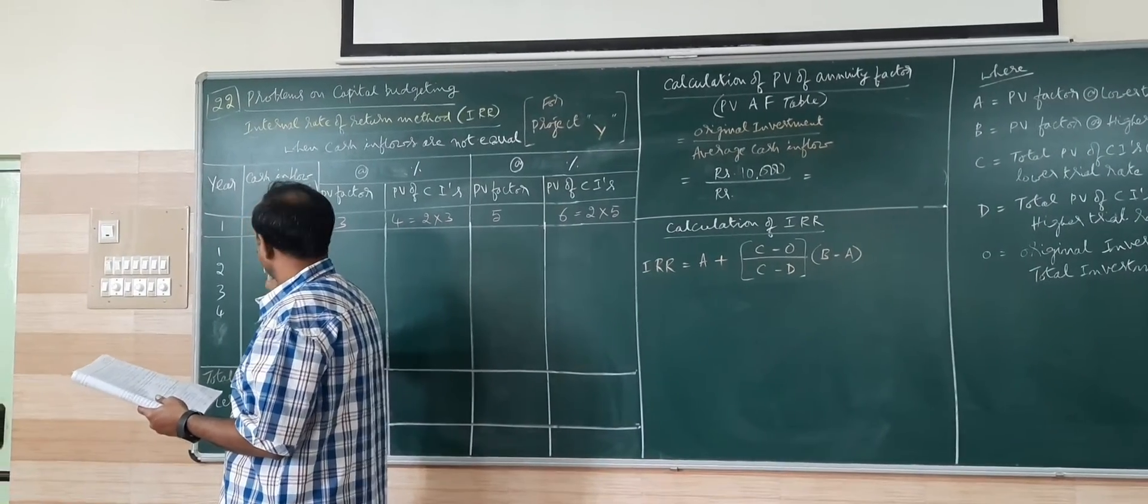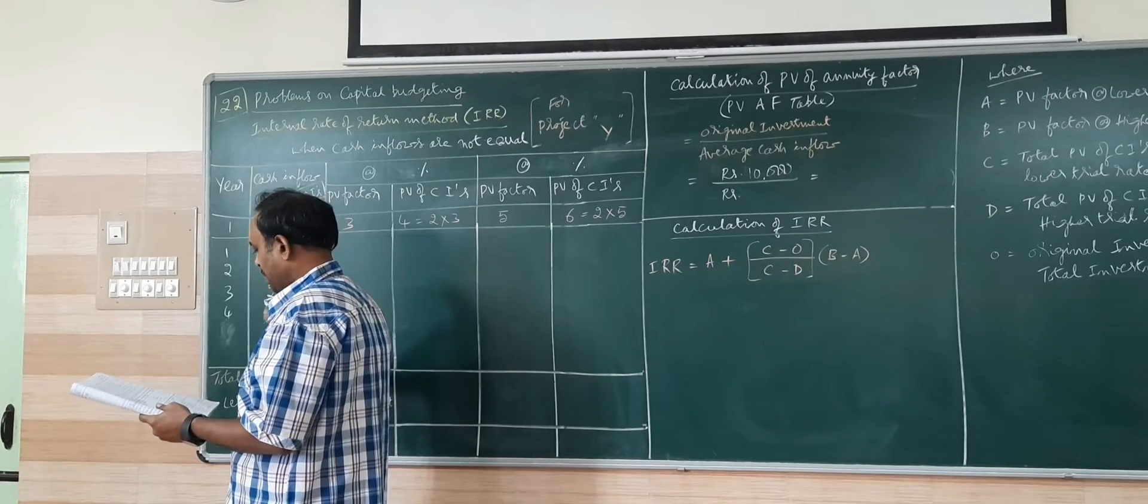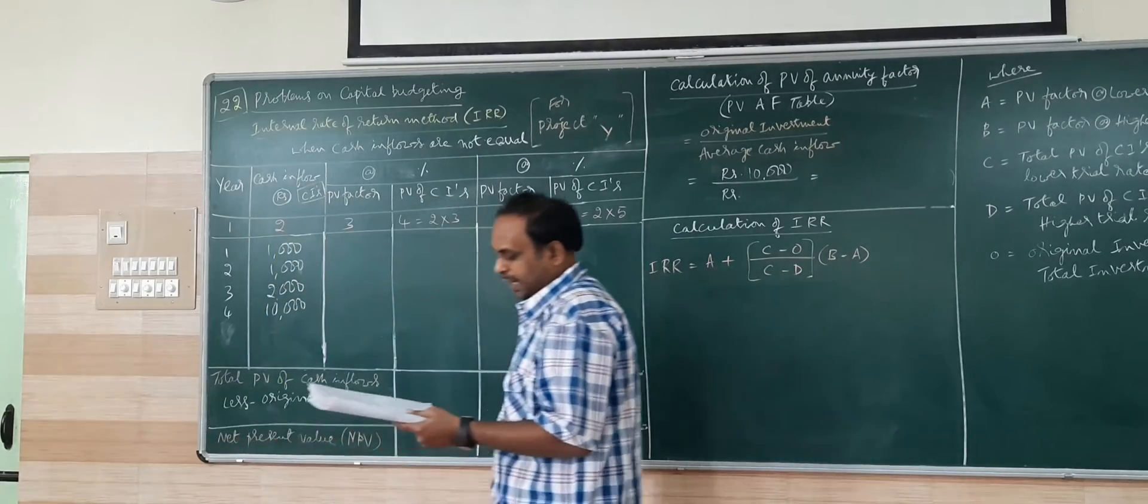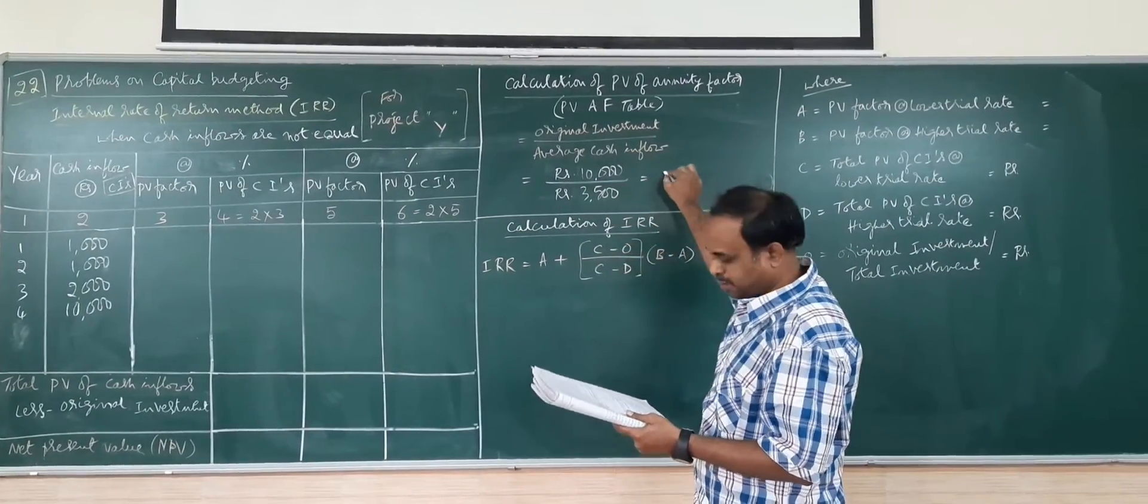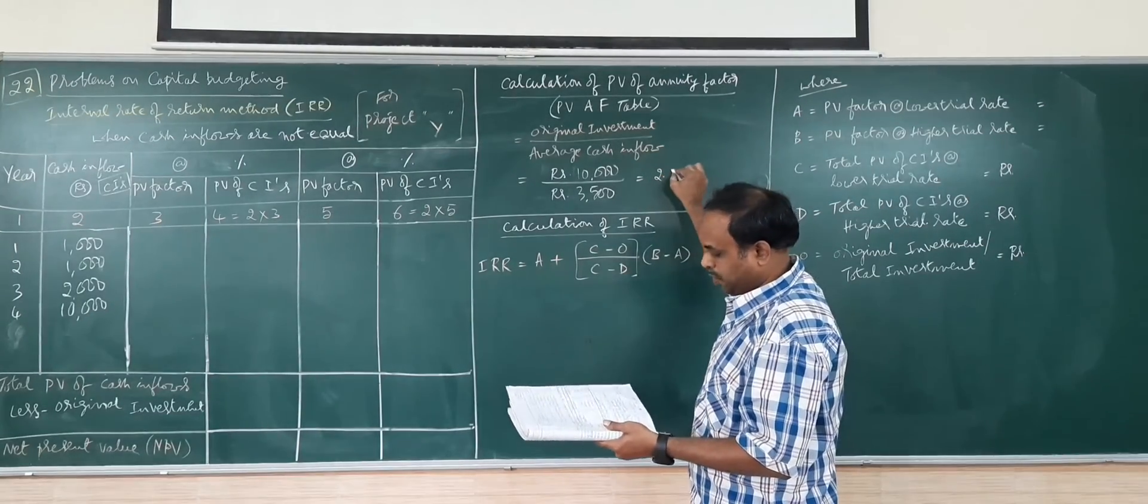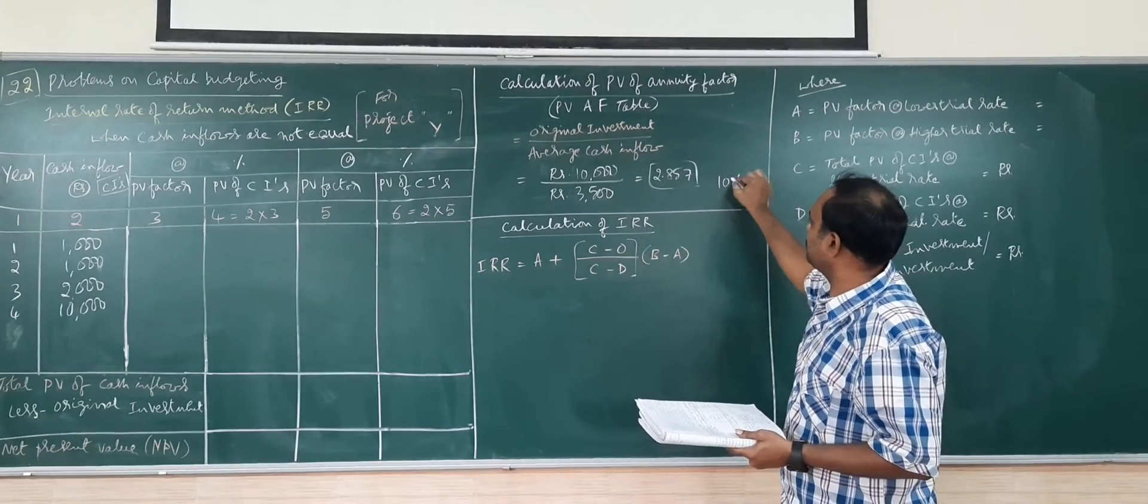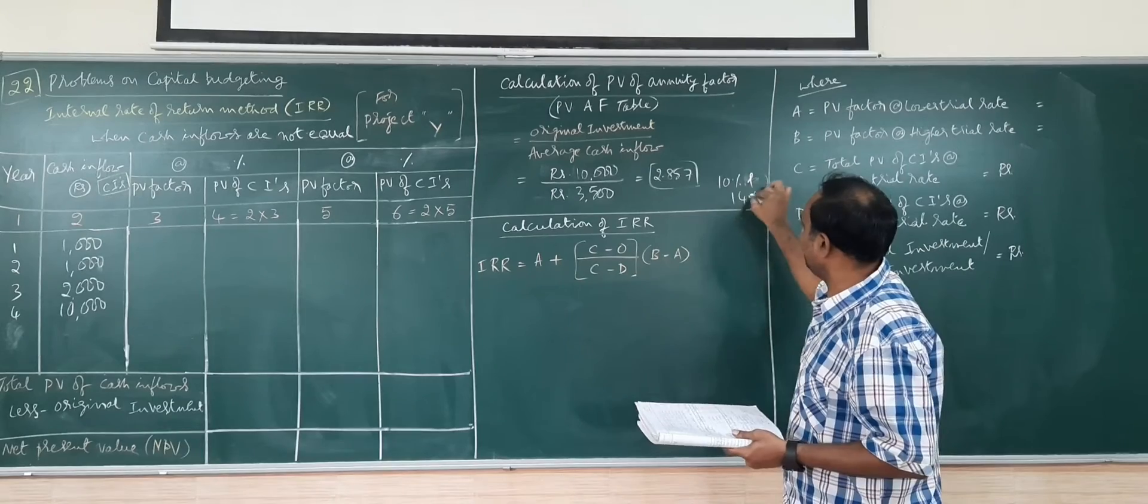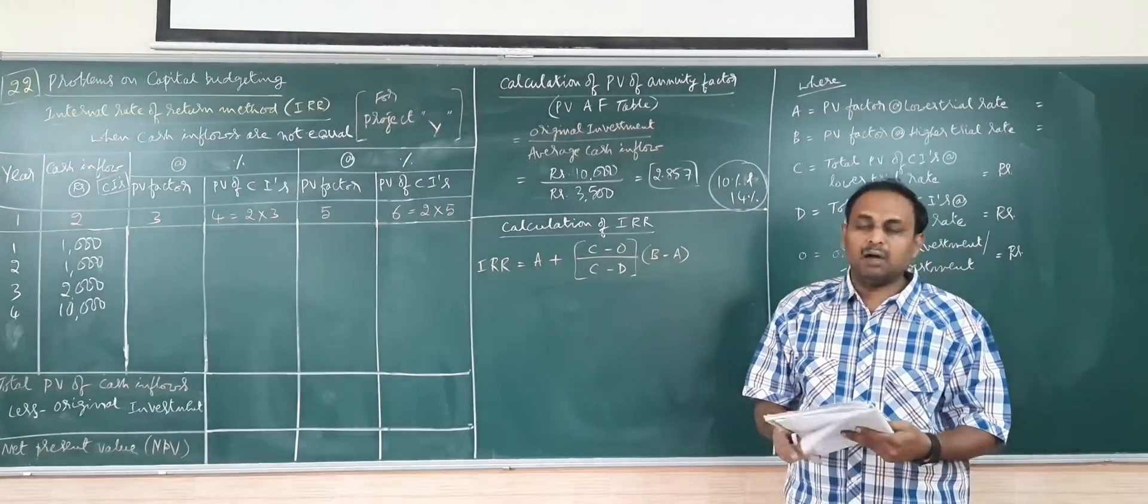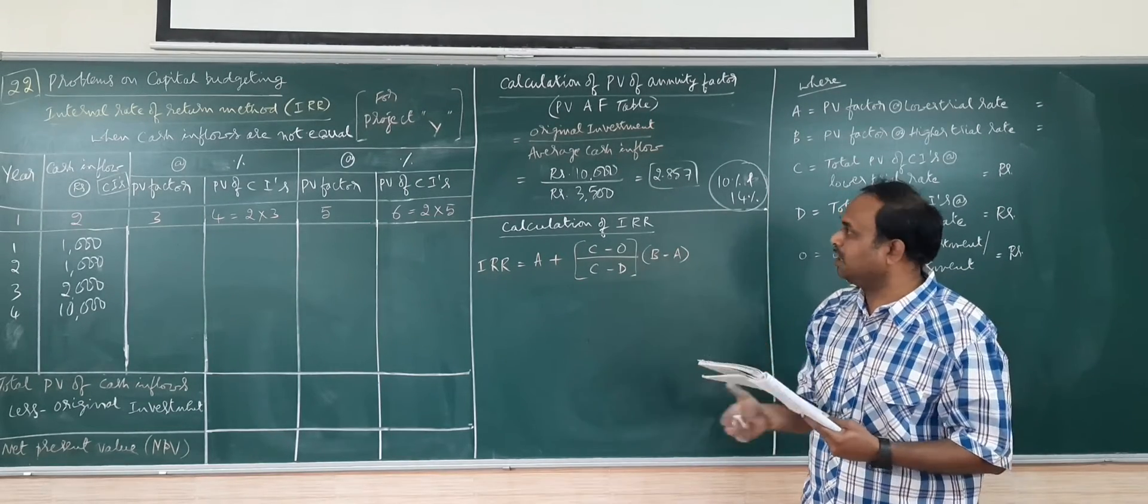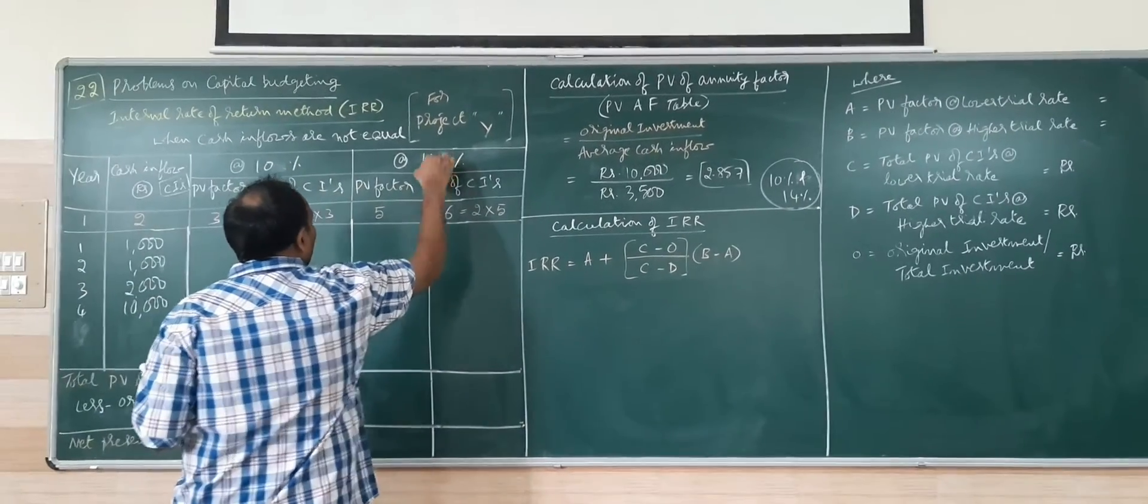Cash inflows are 1,000, 1,000, 2,000, and 10,000. If you add you are going to get again 14,000 divided by 4, you get 3,500. You are going to get 2.857. From the table you are going to find very much lower to 14%. I will take here 10 and 14% for calculation. I can take even 10 and 12, but I have taken here 10 and 14 just for a difference.